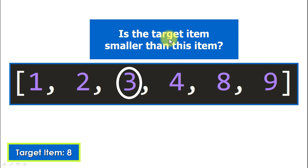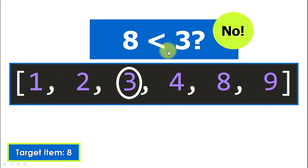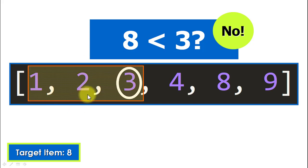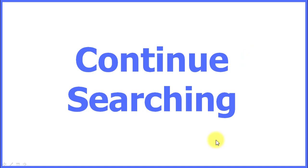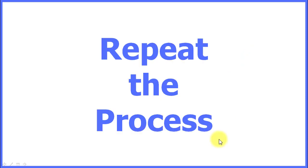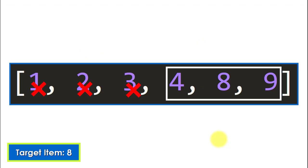We ask: is the target item smaller than this middle element? If so, it could be somewhere in the left part of the list. But that is not the case, because eight is not less than three. So the target cannot be in the left part of the list — we can immediately discard it. The target is not the middle element and is not in that portion of the list.